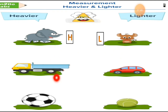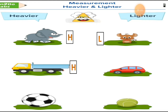Here is a truck and here is a car. If you compare these two things, you can easily tell which one is heavier and which one is lighter. Truck is heavier than the car, so you write H in front of the truck and L for lighter in front of the car. Truck is more heavy and car is lighter compared to the truck.